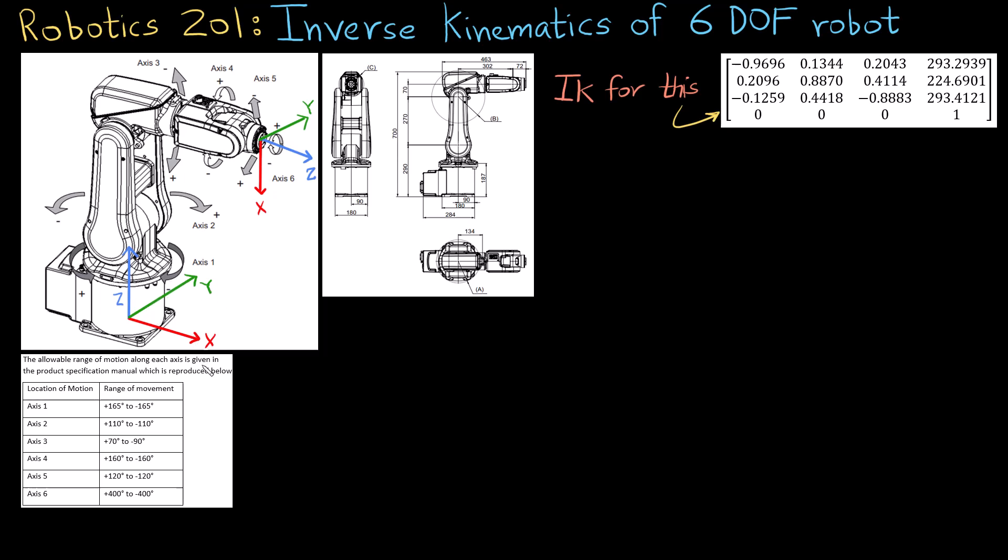This is a six degree of freedom robot, and this is directly taken from the product specification manual which shows you how much the motors can rotate in each direction. I have also taken a picture from the product specification manual which shows you the dimension of the robot, and we are doing the inverse kinematics for this particular homogeneous transform.